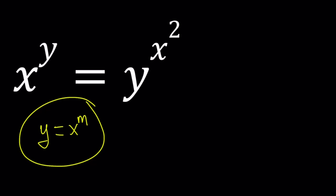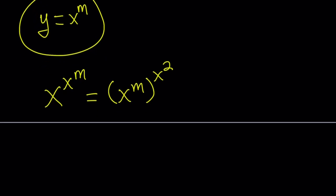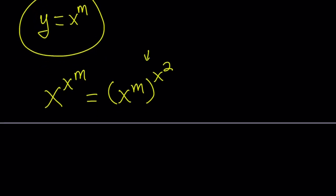Let's go ahead and replace y with x to the power m everywhere. We're basically assuming that x can be written as a power of y, and this structure allows us to do that. After substituting, we multiply the exponents and get: x to the power x to the power m equals x to the power m times x squared.